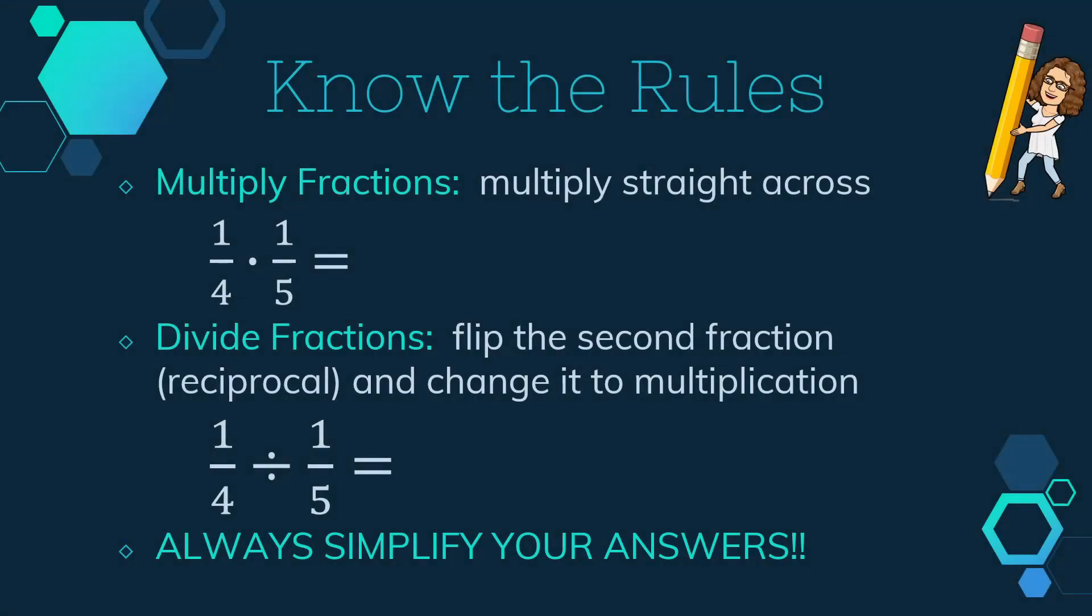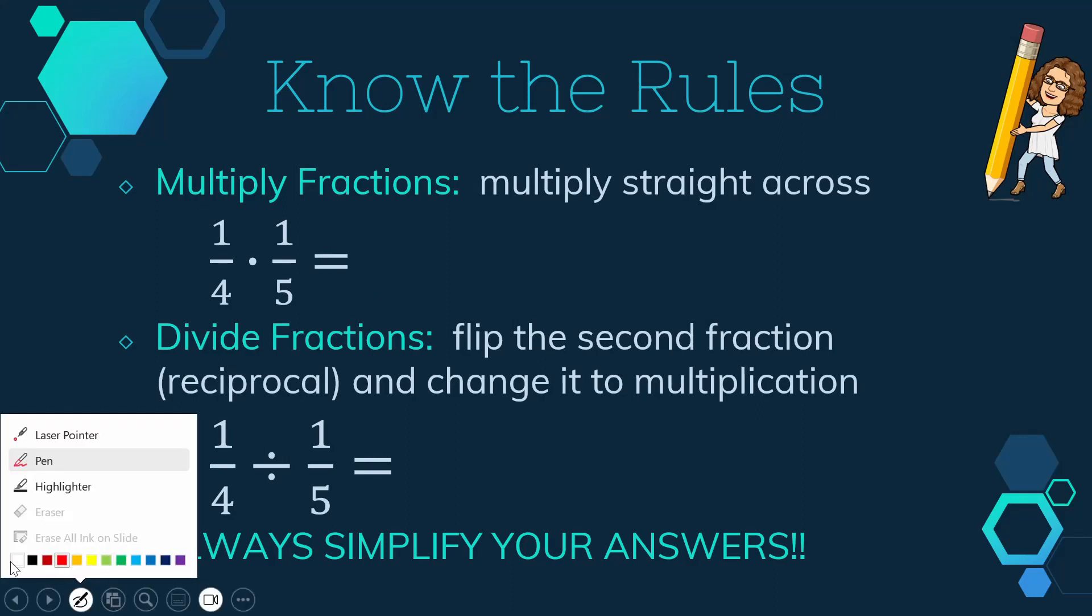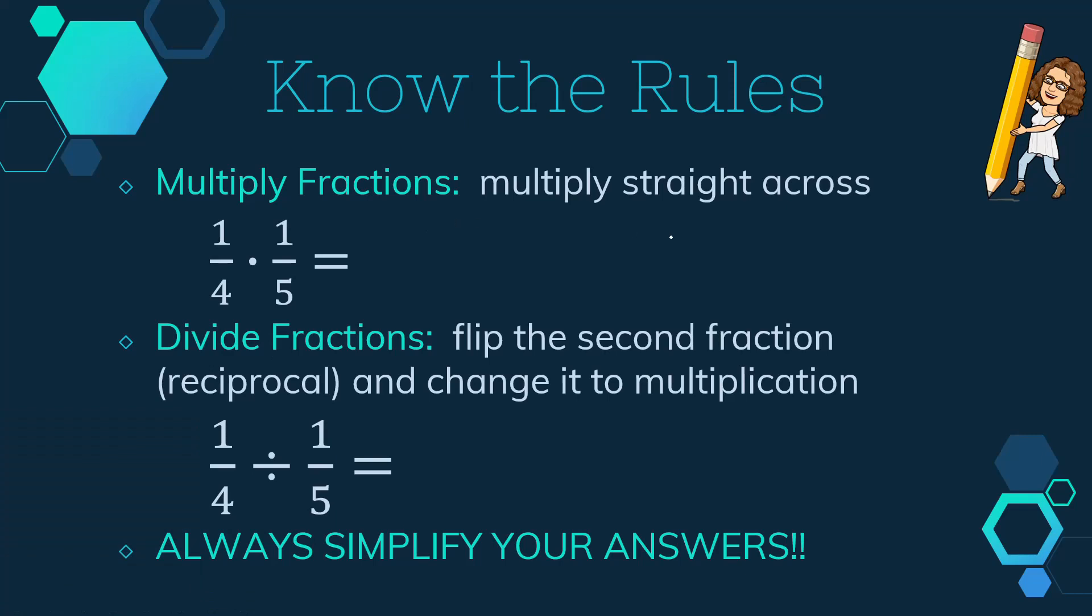So first, we need to talk about the rules. When multiplying fractions, remember, you need to multiply across. So we would multiply the numerators, multiply denominators, and then simplify. So 1 times 1, we get 1. 4 times 5 is 20. And then I check, can I simplify my answer? 1 over 20? No, we can't.